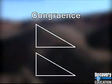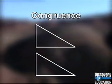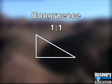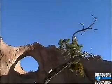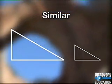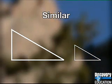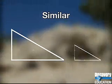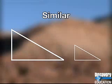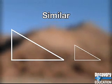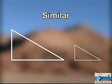Congruent forms are exactly the same shape and size. The ratio of sizes of corresponding parts from one to the other is one to one. Congruent forms are also similar. Similar forms are the same shape, and their corresponding parts have the same size ratio. The ratio determines the scale of one with respect to the other, so a shape's proportions are preserved. This larger triangle's dimensions are twice the smaller ones — the ratio is two to one.